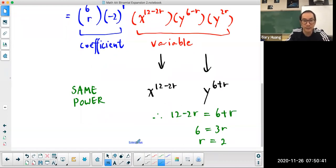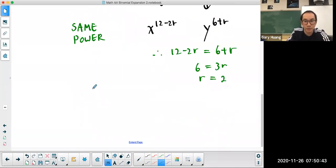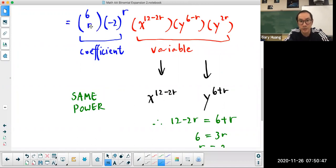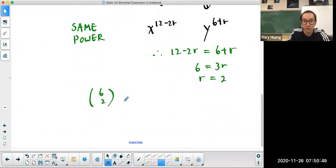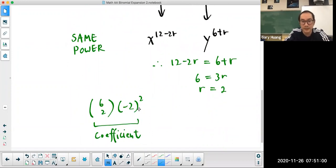The coefficient is going to be 6 choose r, coefficient 6 choose r, and negative 2 to the power of r, which is 2. So this is your coefficient. And the variable is going to be x to the power of 8, y to the power of 8.